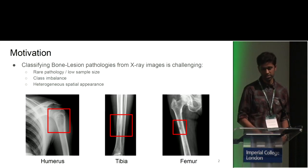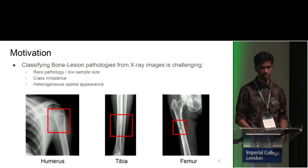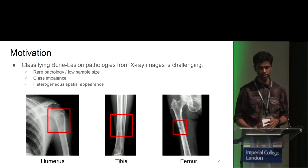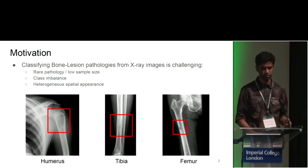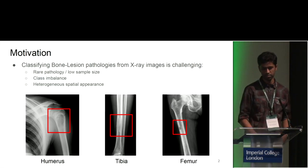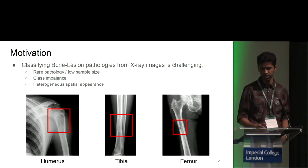This is a really challenging task because bone lesions are an extremely rare pathology, which means we have very few positive images to train with, and there's a terrible class imbalance problem that has to be dealt with. Here are a couple of examples of bone lesions on the three body parts described in the paper.